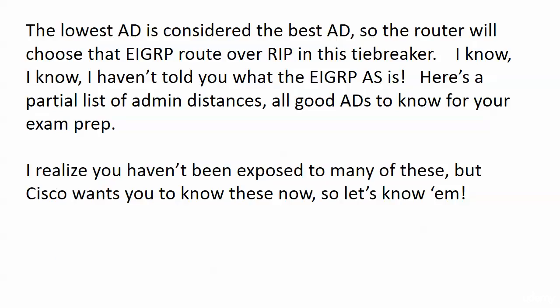As far as all these other ADs go — how does the router choose which one is the best AD, the higher one or the lower one? The lowest AD is considered the best AD. The lower the administrative distance, the more believable the source of the route. So in this case, the router is going to choose that EIGRP route over RIP in the tiebreaker. I'm going to show you an entire table of ADs, and you'll see exactly what I'm talking about with EIGRP. They're all good ADs to know for your exam prep.